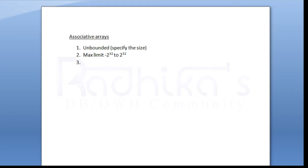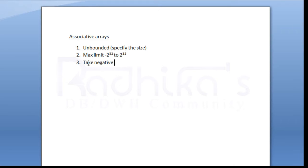The third point is that associative arrays will take negative subscripts. By seeing the max limit range itself we can easily say that these arrays accept negative subscripts. That is the third point.